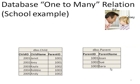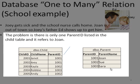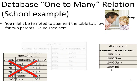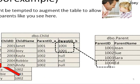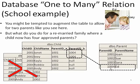That works great for a little while, but let's use this example. Joey gets sick and the school nurse calls home. Joan is out of town, so Joey's father Ed shows up to get him. The problem is there's only one parent ID listed in the child table, and it refers to Joan, not Ed. So this doesn't quite scale enough to handle both parents. You might be tempted to say, let's have a parent ID A and a parent ID B and look it up that way. But what do you do for a remarried family where a child now has four approved parents?